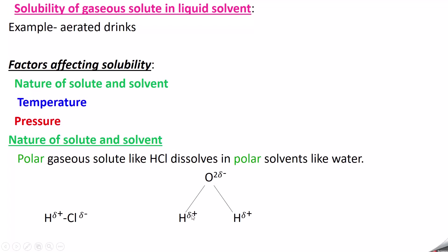Water is taken as a polar solvent because oxygen and hydrogen share a pair of electrons to form a covalent bond, but this shared pair of electrons is attracted towards oxygen due to its high electronegative character, giving a partial negative charge on oxygen and a partial positive charge on hydrogen. Since there is ionic separation in this compound, it is taken as a polar compound. So the polar gaseous solute like hydrogen chloride dissolves in polar solvents like water.